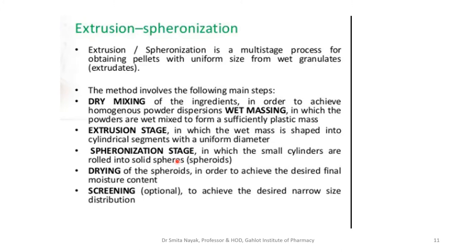In the spheronization stage, the small cylinders manufactured during extrusion are rolled into small solid spheres or spheroids. These spheroids are wet in nature — the moisture is still there — so they need to be dried. The next step is drying of the spheroids in order to achieve the desired final moisture content. Finally, there is an optional step of screening, which may be carried out if a narrow size distribution of the pellets is needed.